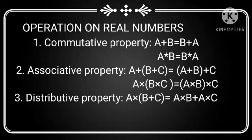Second one: Associative property. In addition, a plus (b plus c) equals (a plus b) plus c. In multiplication, a into (b into c) equals (a into b) into c.